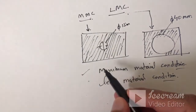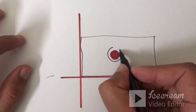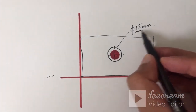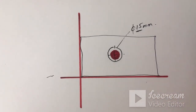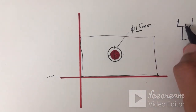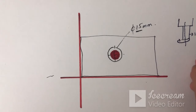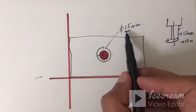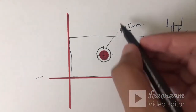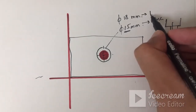Now we will see how MMC and LMC can be applied to our original part. This part had a hole of 15 mm, but it's not necessary that the hole will come exactly 15 mm in diameter. Sometimes the drill bit is not aligned properly, or on a sheet metal part the punch is misaligned. The drill bit axis won't be exactly at center — it may be slightly misaligned, creating a hole of perhaps 18 mm instead of 15 mm. So the hole can go maximum up to 18 mm. When it is 15 mm that is the maximum material condition, and 18 mm is the least material condition.